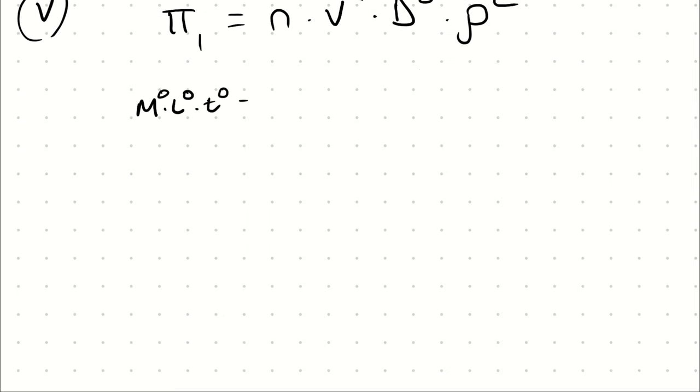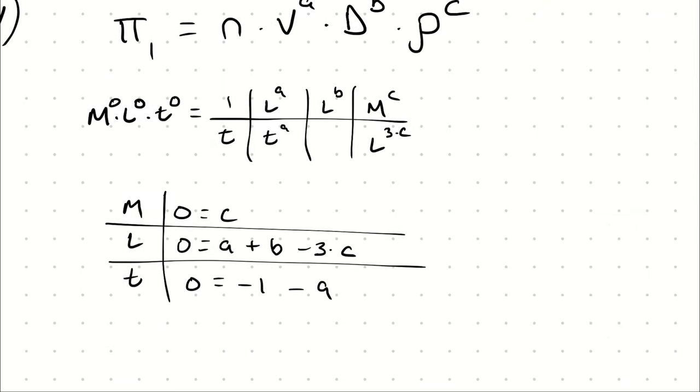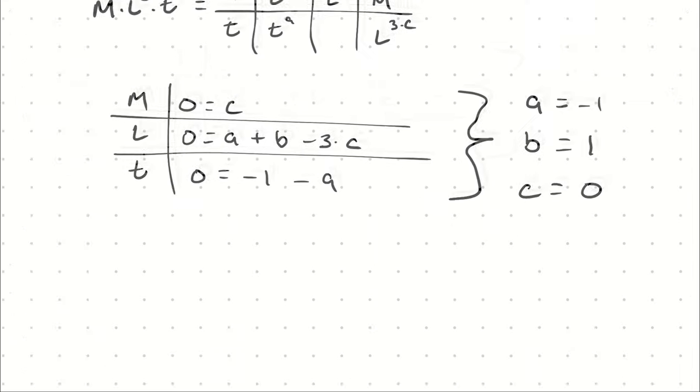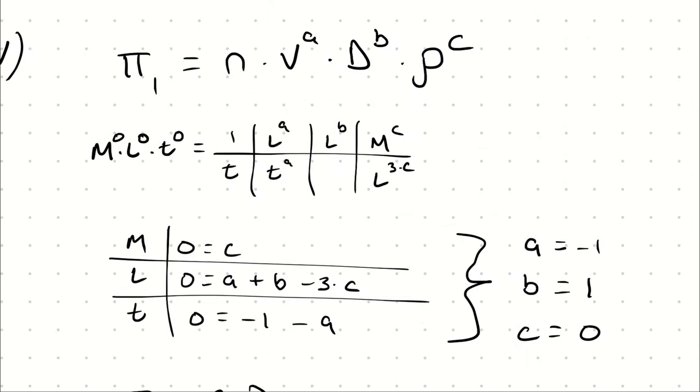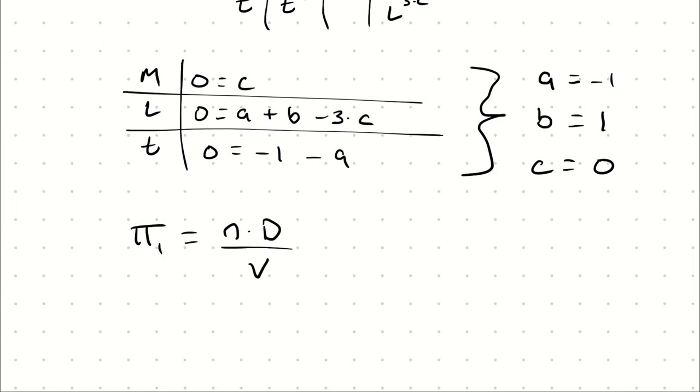I started by using exponents a, b, and c, and tried to determine values that would produce a non-dimensional number. I set up my dimensions as three separate equations, and use three equations and three unknowns to solve for them. It's very similar to balancing a chemical reaction. My mass equation is zero on the left, mass appears only once on the right with c. For length, I have zero on the left, and a + b - 3c on the right. For time, zero on the left and -1 - a on the right. That gives me a = -1, b = 1, and c = 0. Therefore, my first pie group is n × diameter / velocity.